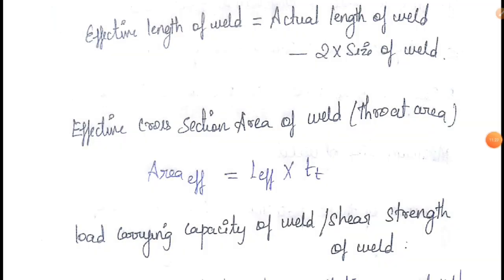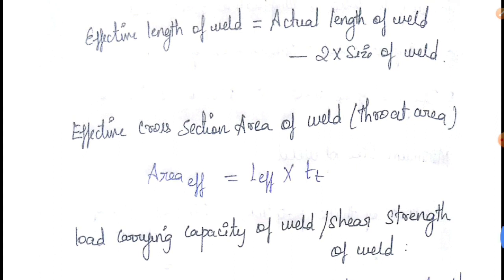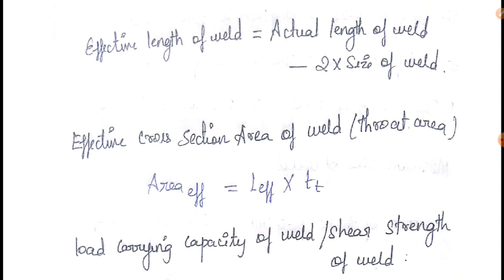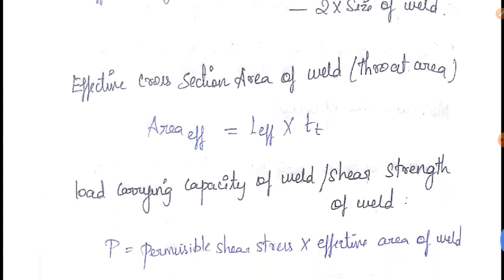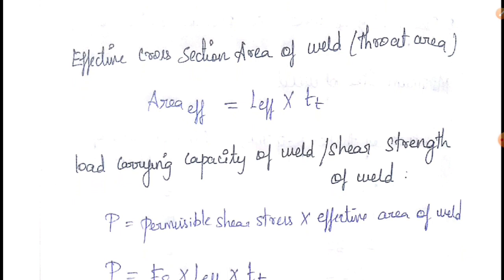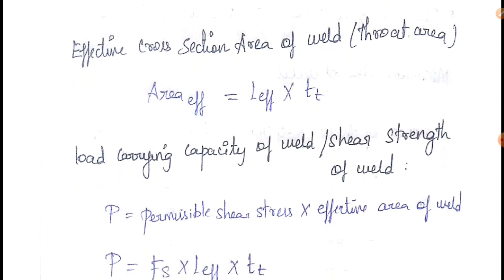Effective length of fillet weld: effective length = actual length of weld minus 2 × size of weld. That is the throat area. Area of effective weld = effective length of weld × throat thickness.